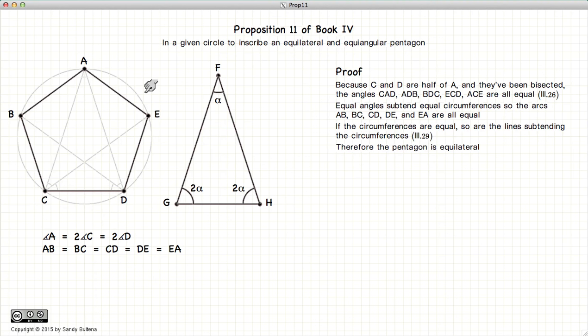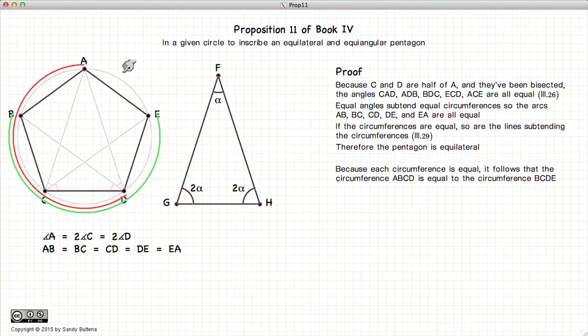The next thing we need to show is that the angles are equal. Alright, now AE is equal to AB.